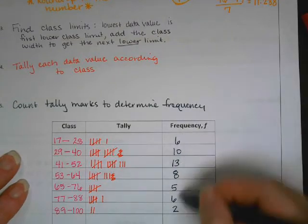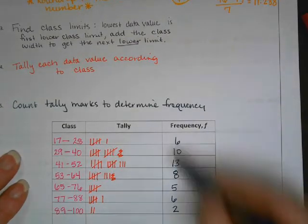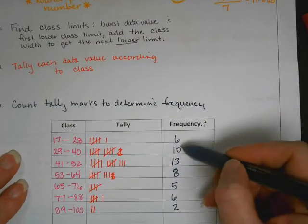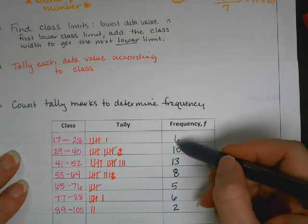And when you sum all of those, there were 50 scores, so it should total 50. If it doesn't, that means you missed one somewhere.